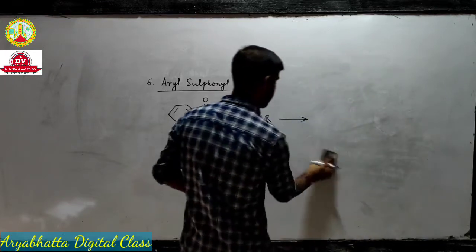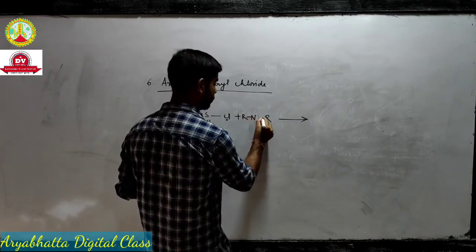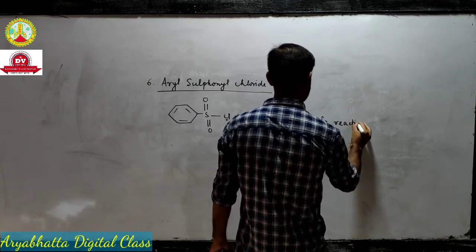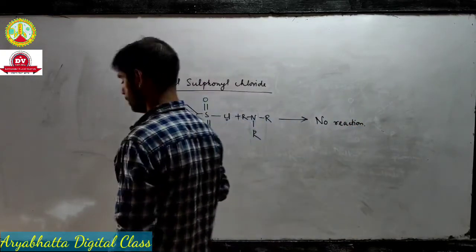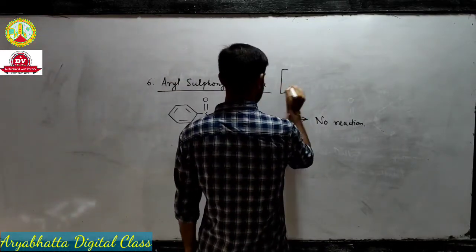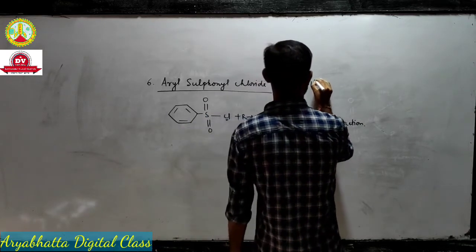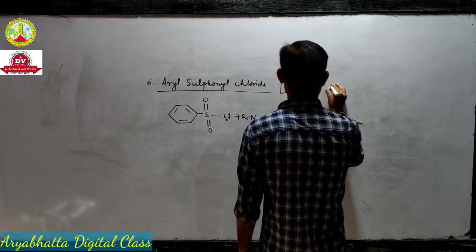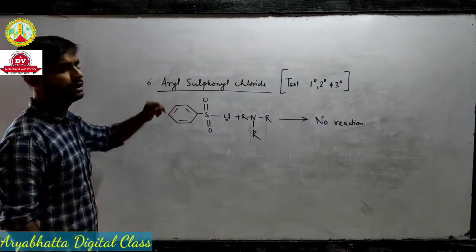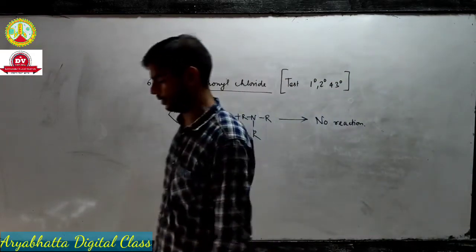If we take a tertiary amine, there will be no reaction at all. So we have seen that the reaction with aryl sulfonyl chloride can be used to test whether the given amine is primary, secondary, or tertiary in nature using Hinsberg's reagent.